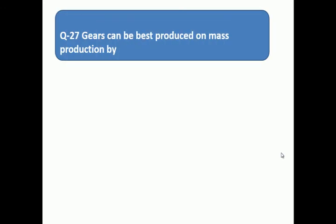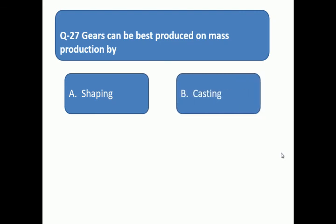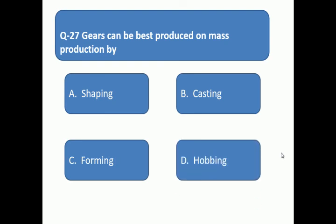Question 27: Gears can be best produced on a mass production by. Gears' mass production is done by which method? A: shaping, B: casting, C: forming, D: hobbing.